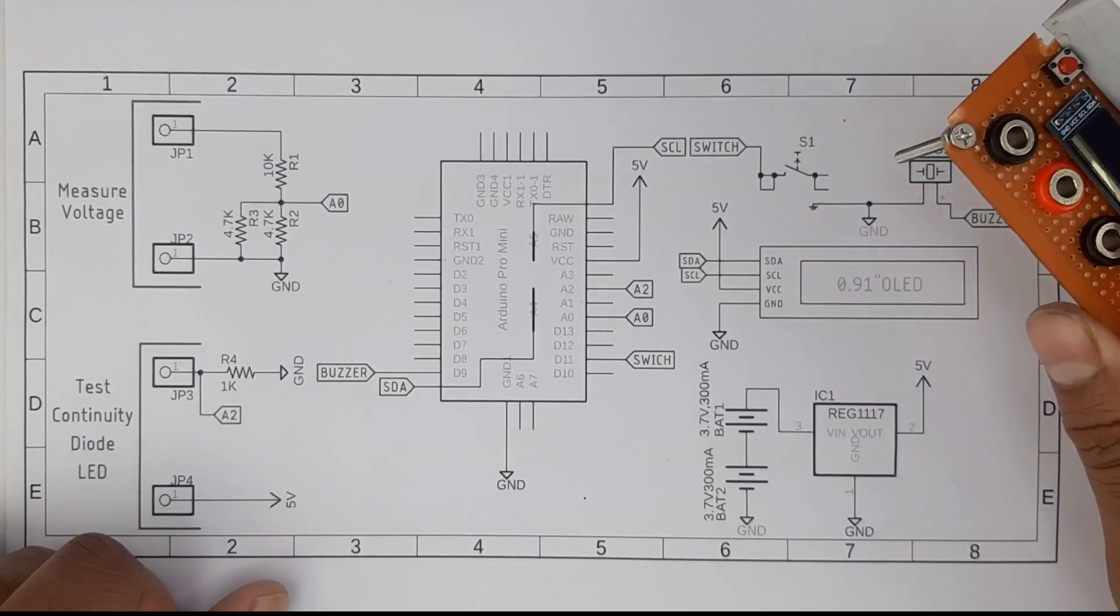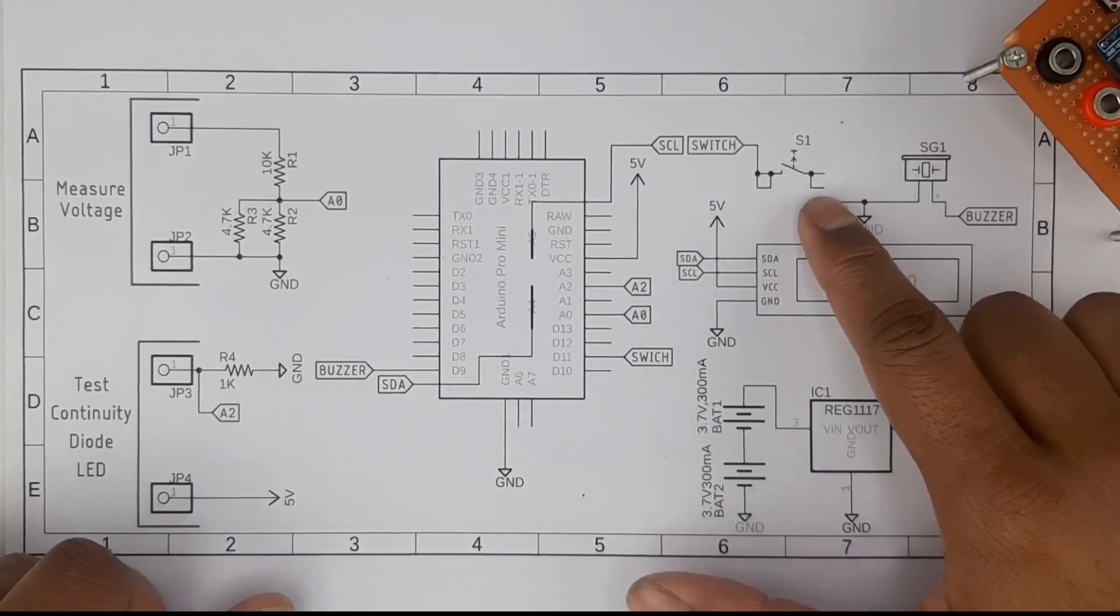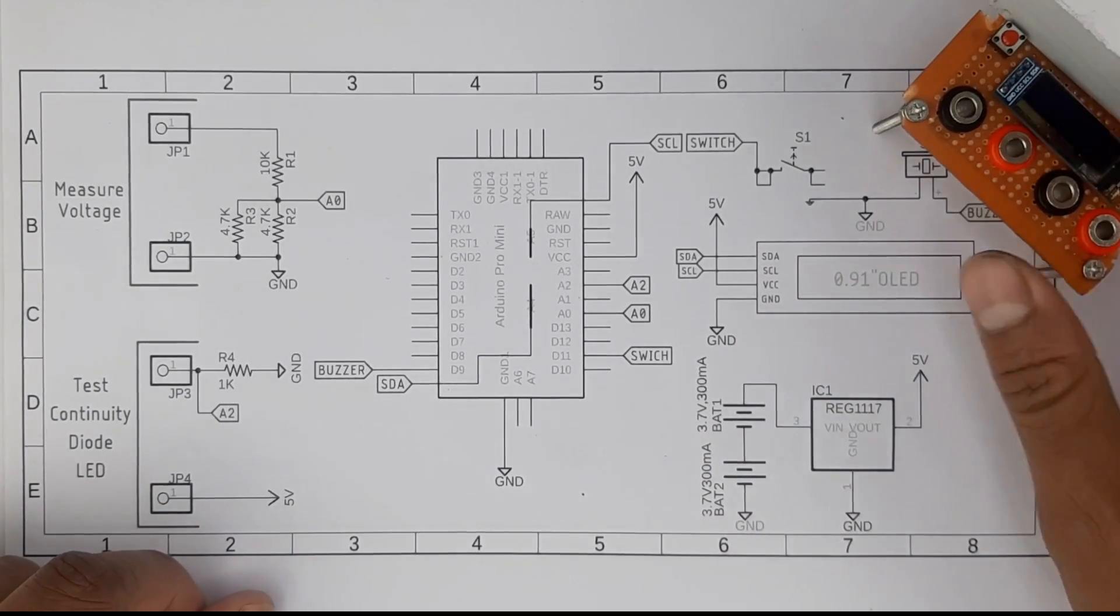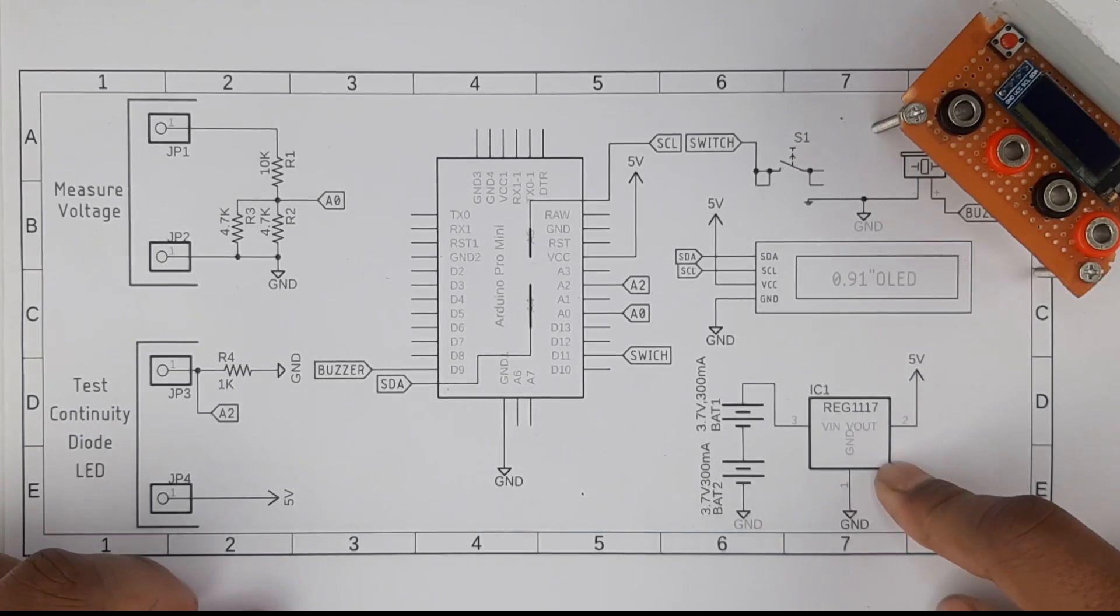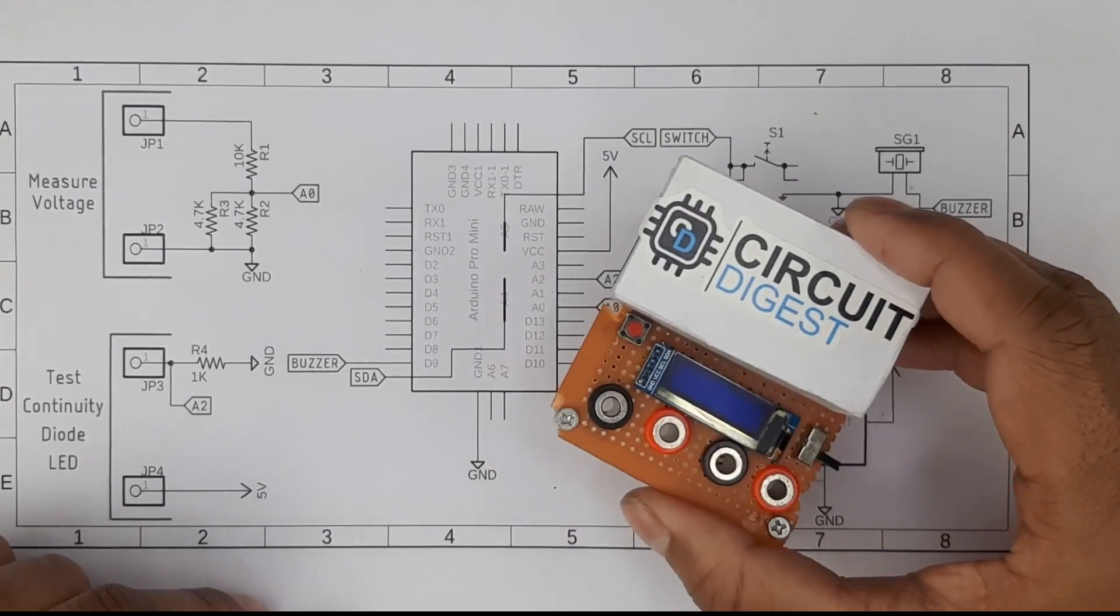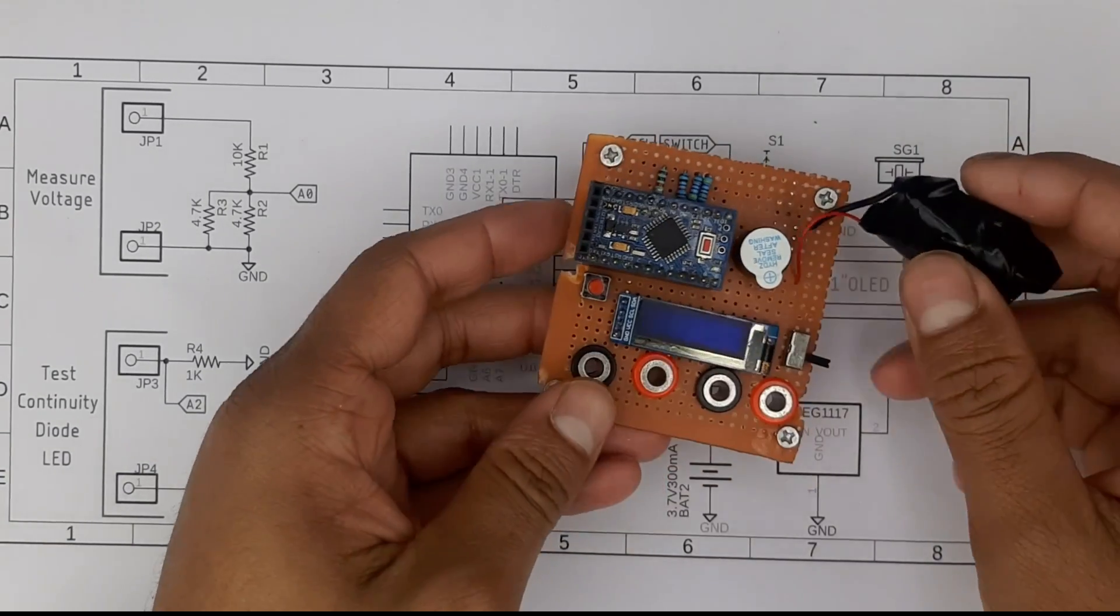We have a select switch to toggle between different modes and we have our regulator to power all the circuits. If I put this cap out you can see what the circuit is made out of. Let me give me some time to remove this cap.